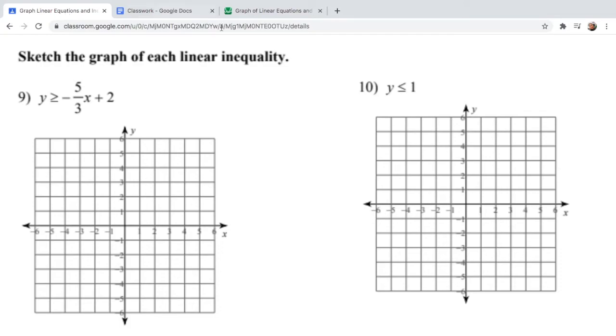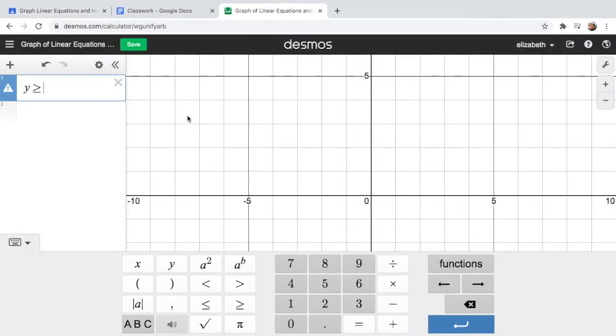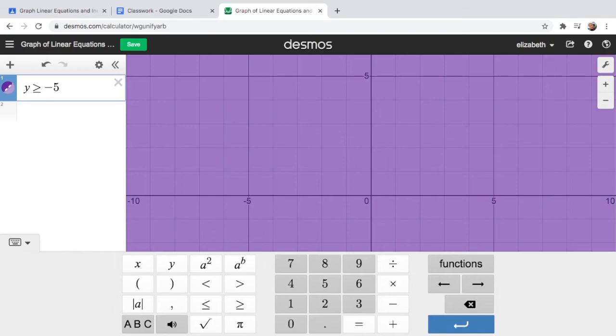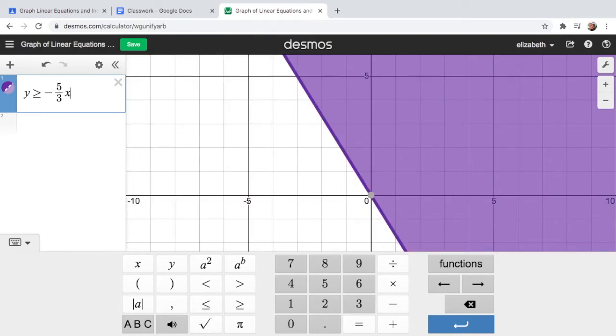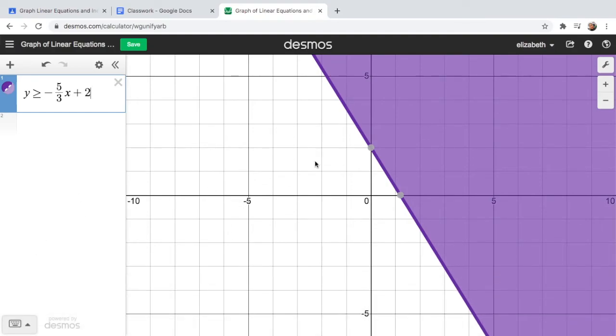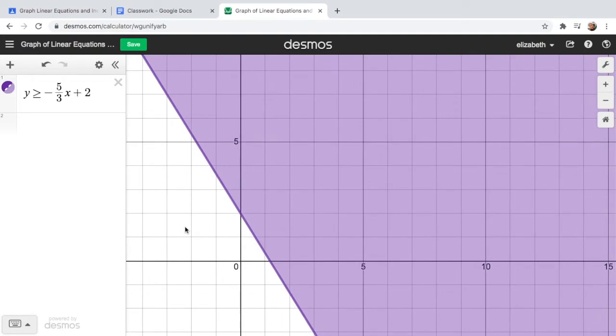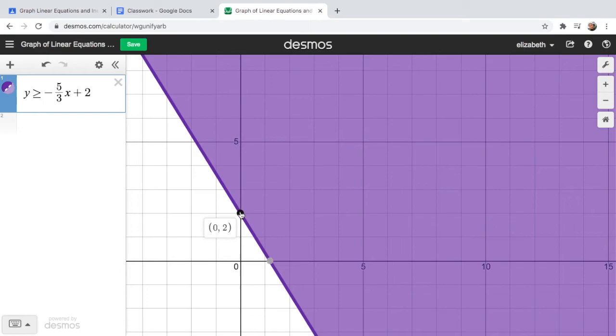And then -5/3, -5 slash 3, arrow right, x + 2. And there you go, here is your graph. So as you can see, the y-intercept is 0, 2, and the x-intercept is 1.2. And then the shaded area is on this side.